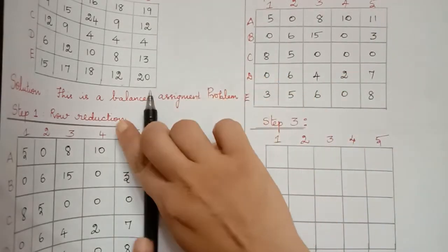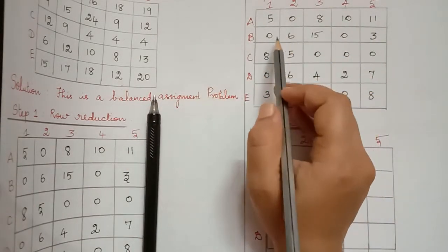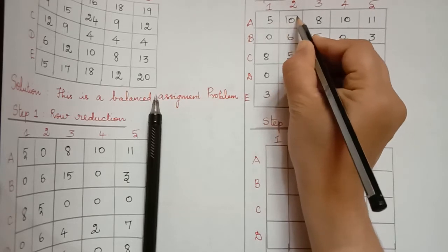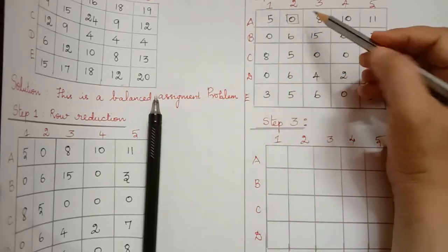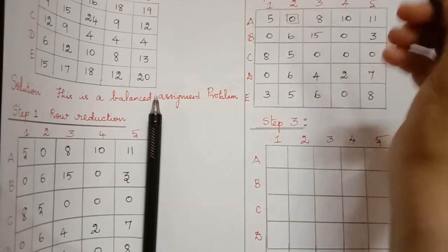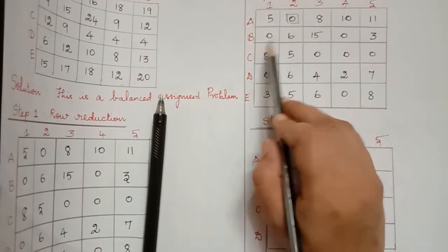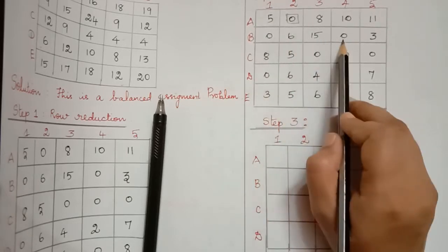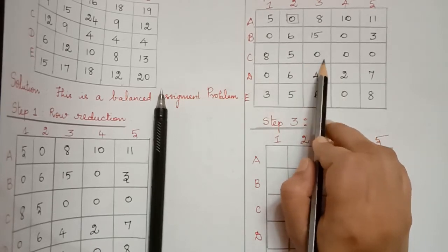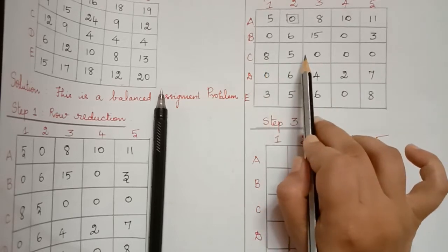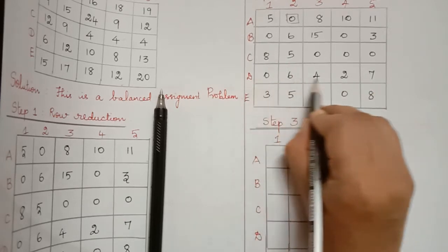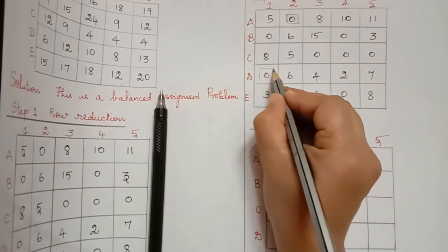Before going to step 3 we have to make the selection of zeros. In the first row the only zero available is this one, so we select it and check whether there are any zeros in that corresponding column — there are none. We move on to row 2, which has two zeros, so no selection is made. In the third row there is more than one zero again, so no selection. In the fourth row there is only one zero available.